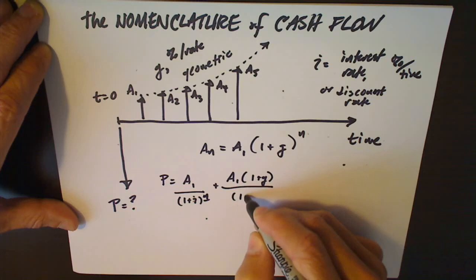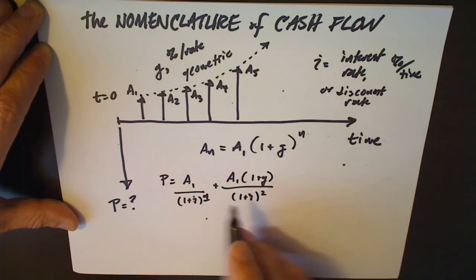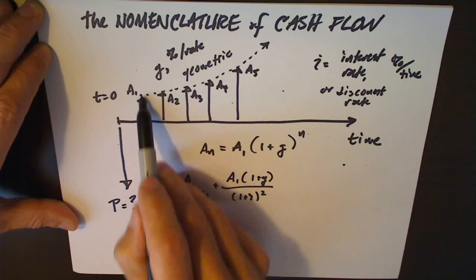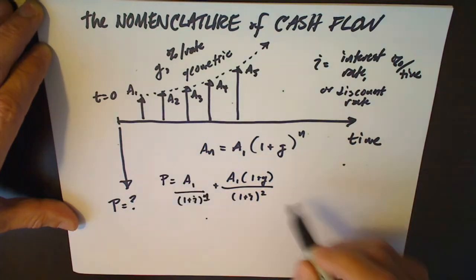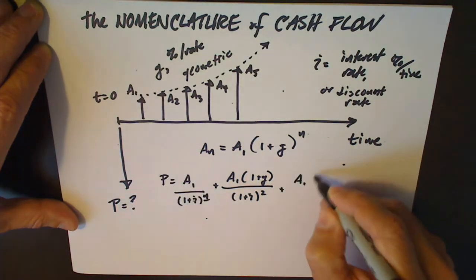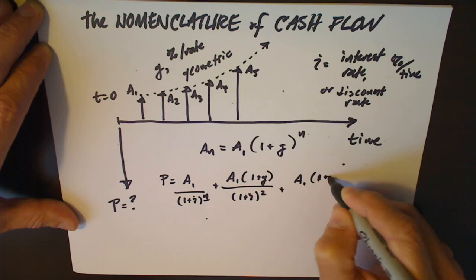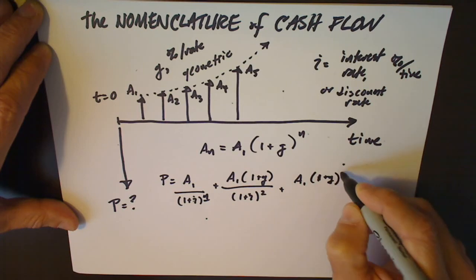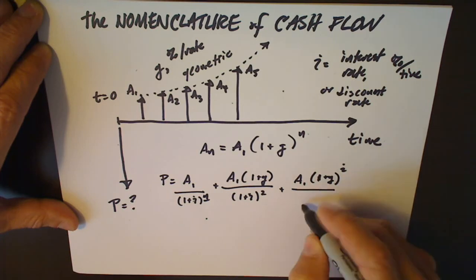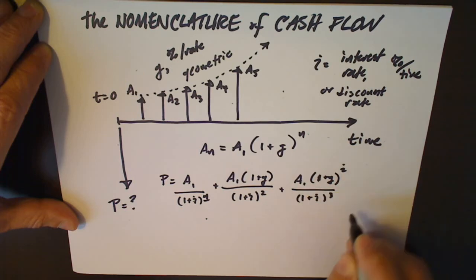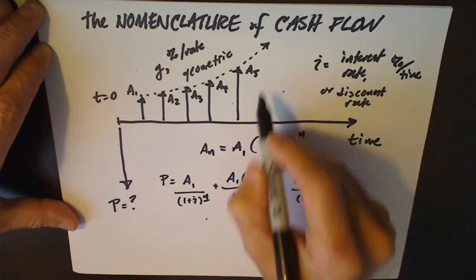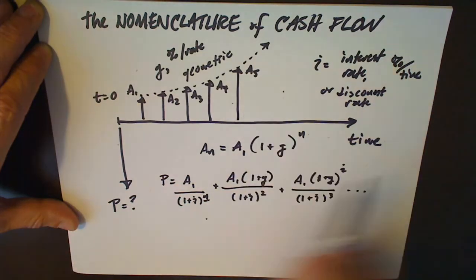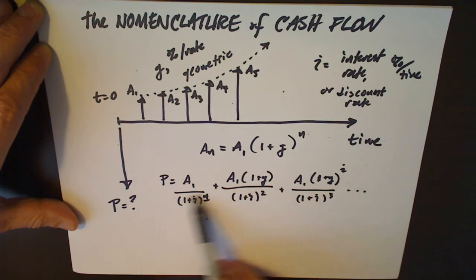Over 1 plus i to the 2. You can see how this one is going to be A2, plus A1 times 1 plus g squared over 1 plus i to the 3, on and on until we get to, in this case, 5. And you can see how this is very tedious. Let's not do it this way.